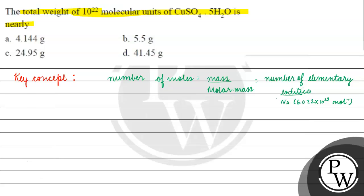What do we need to find? We need to find the mass of 10^22 molecular units. So the mass will be of copper sulfate, CuSO4·5H2O, right?